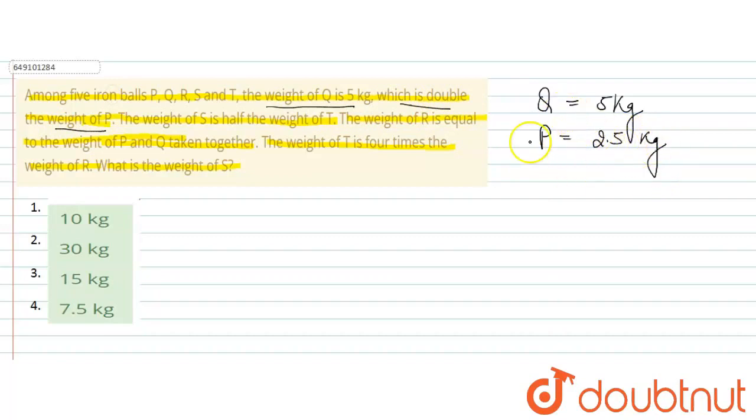Because Q's weight is double the weight of P. Then given is, the weight of S is half of weight of T.